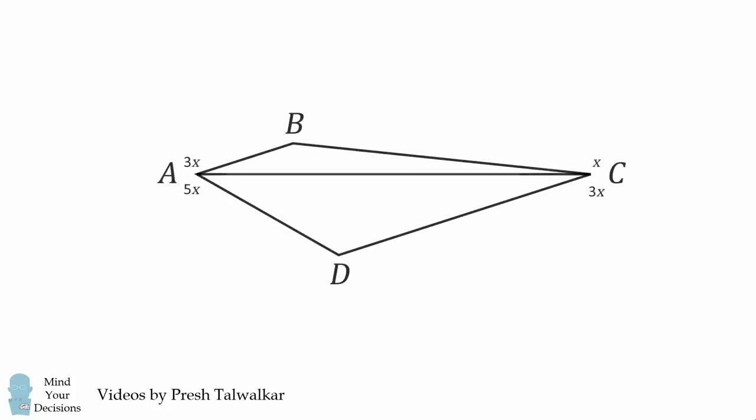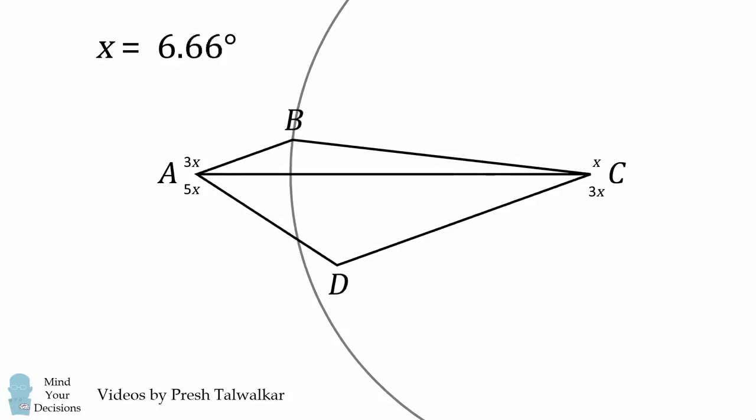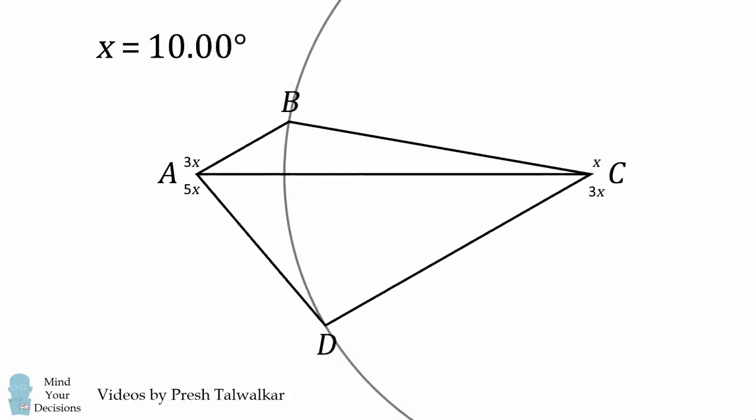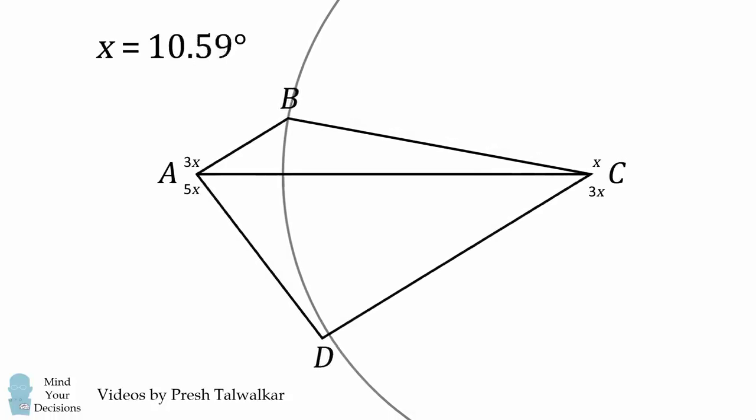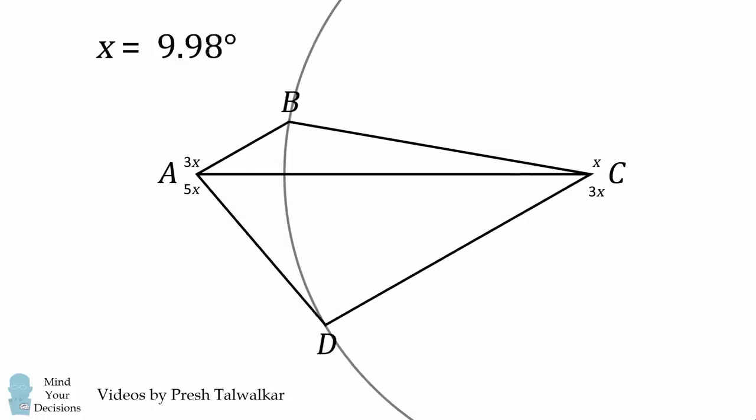We can construct a quadrilateral with a specific value like X is equal to 6 degrees. We then construct a circle centered at C with the radius equal to BC. We then vary the angle X until we get BC is equal to CD. This happens at exactly one value, and that value will be X is equal to 10 degrees.